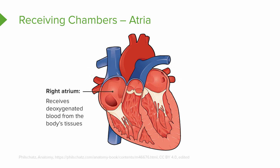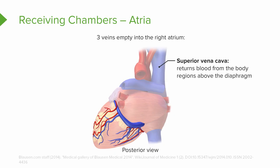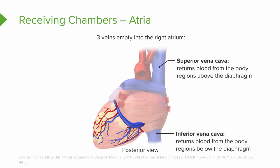The right atrium of the heart receives deoxygenated blood that is returning to the heart from the body's tissues. There are three main veins that empty into this right atrium. We have the superior vena cava, which returns blood from regions above the diaphragm; the inferior vena cava, which returns blood to the heart from regions below the diaphragm; and the coronary sinus, which returns blood from the coronary veins in our coronary circulation.